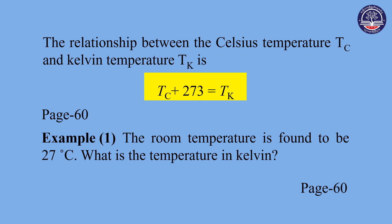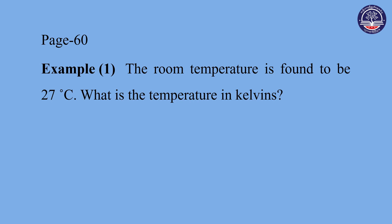The Kelvin scale is given by K equals degrees Celsius plus 273. The room temperature is found to be 27 degrees Celsius. The temperature given in 27 degrees Celsius can be converted using this formula.